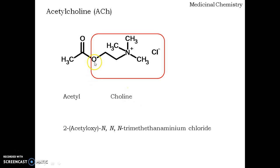It has a hydroxy group on the second carbon. The nitrogen in choline is quaternized by the presence of three methyl groups. The positive charge is balanced by the negatively charged chloride anion. This is the structure of acetylcholine.